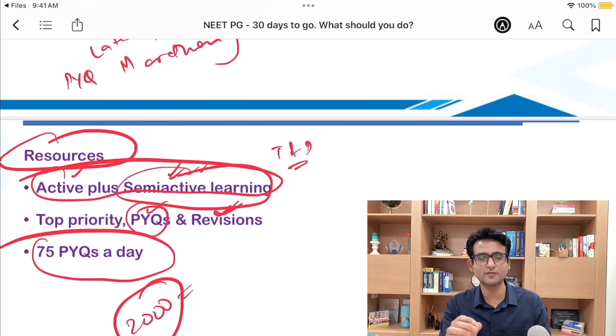Ensure that when you walk out of that examination hall on 23rd of June, and when you think of the last 30 days, you feel proud of yourself. Irrespective of what result comes, you should be able to say that I gave it all. I gave it all in the last 30 days. And whatever the result comes, I would be satisfied.